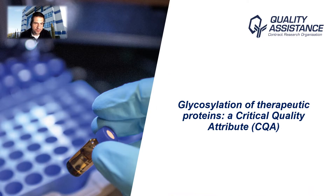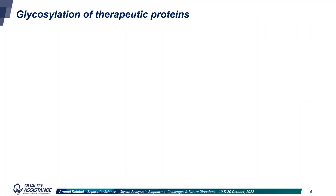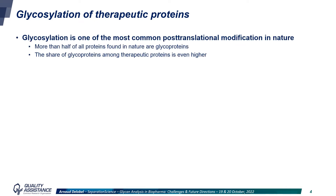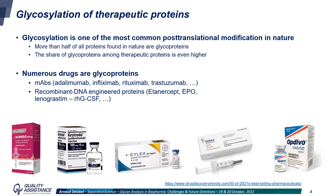Let's focus now on the topic of today, glycosylation, and let's see first why it is often considered as a critical quality attribute of biotherapeutics. Glycosylation is one of the most common post-translational modifications in nature. It is estimated that more than half of all proteins found in nature are glycosylated, but if we consider therapeutic proteins only, the share of glycoproteins is even higher. A lot of drugs are actually glycoproteins, and that's the case of the vast majority of monoclonal antibodies, such as adalimumab, infliximab, rituximab, or trastuzumab.